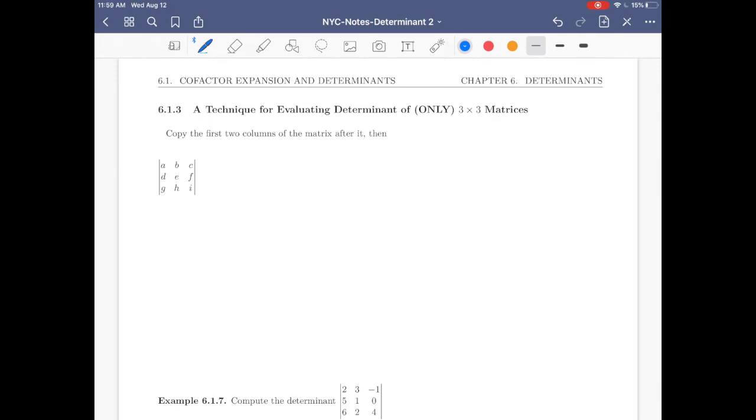Now, let's start the subsection 6.1.3. In this section, we want to learn a new technique for evaluating the determinant of only 3 by 3 matrices. Only 3 by 3. Be careful. How do we do that? Well, whenever a 3 by 3 matrix is given and you're supposed to calculate the determinant, just copy the first two columns of the matrix right here. So, A, D, G, and then B, E, H.